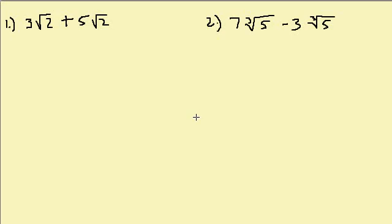Alright, let's take a look at adding and subtracting radicals. Whenever we add or subtract radicals, the radical has to be exactly the same. You have to have the same thing underneath the radical, and if one of the radicals is a square root, the other one has to be a square root. If one's a cube root, the other has to be a cube root, and you have to have the same value under the radical.